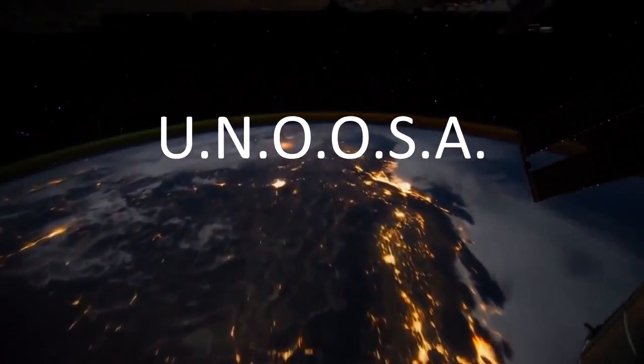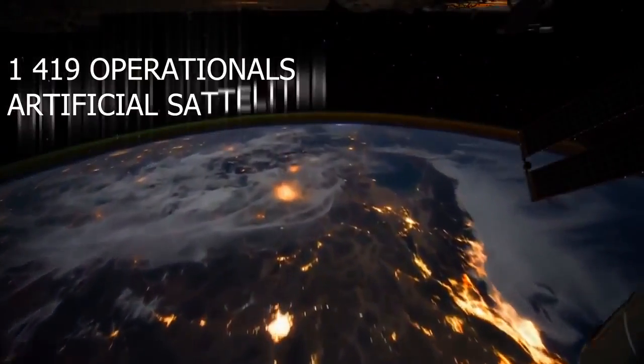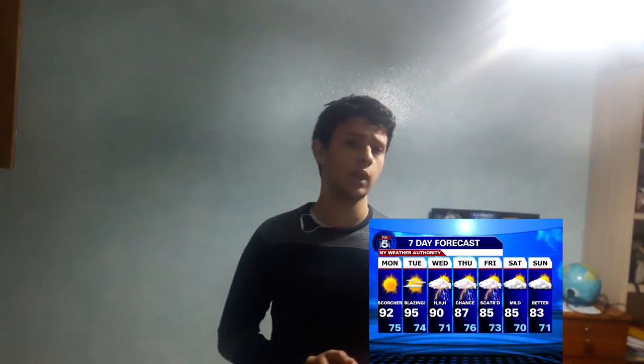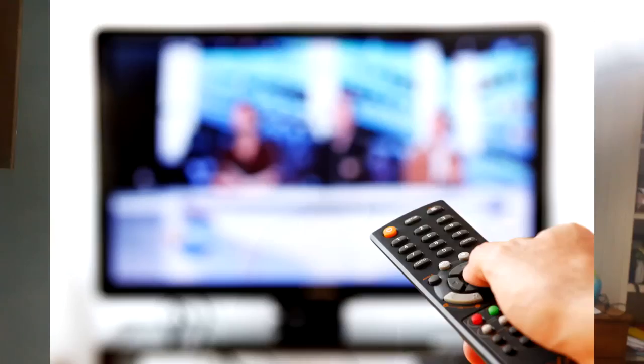According to the United Nations Office of Outer Space Affairs, there are currently more than 1,400 operational satellites orbiting our planet. They've given us forecast weather, they're helping us navigate, sending us television signals directly to our homes. But how do artificial satellites get up and stay there?